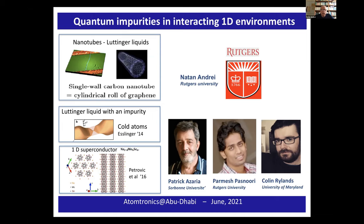Impurities in systems are a very old topic, but typically such impurities have been studied extensively in metals. Metals are described by a Fermi liquid gas of electrons, which are essentially free. But if there are interactions in those host metals, then new phases and new properties emerge. And that is the subject of my interest. An example of a Fermi liquid with an impurity is provided by cold atoms — these are the type of systems I would be interested in.